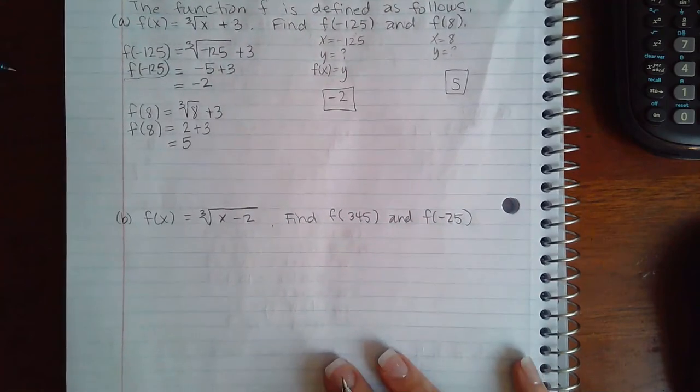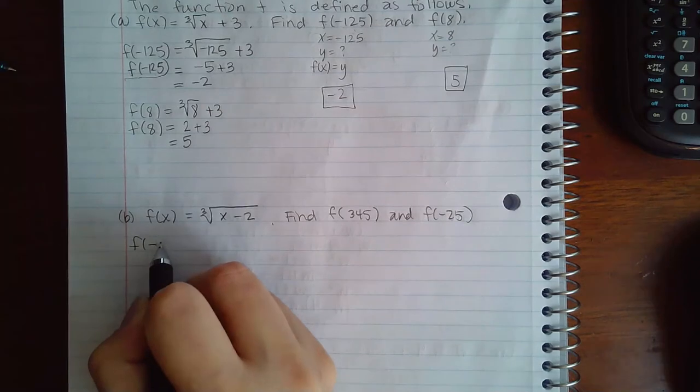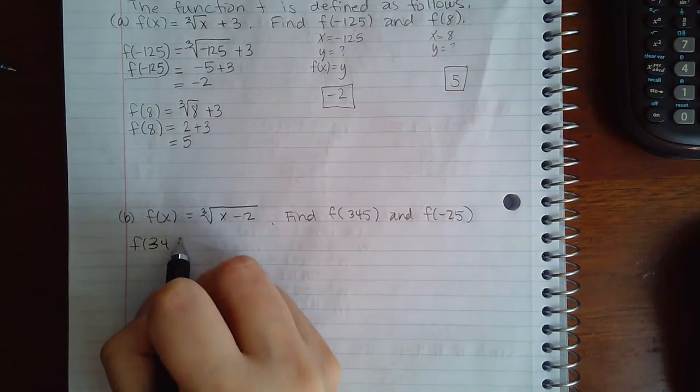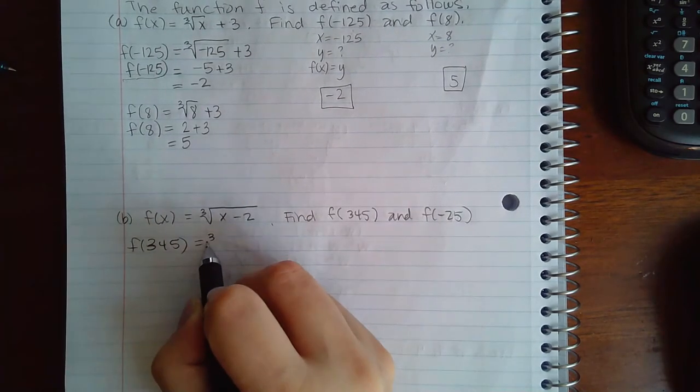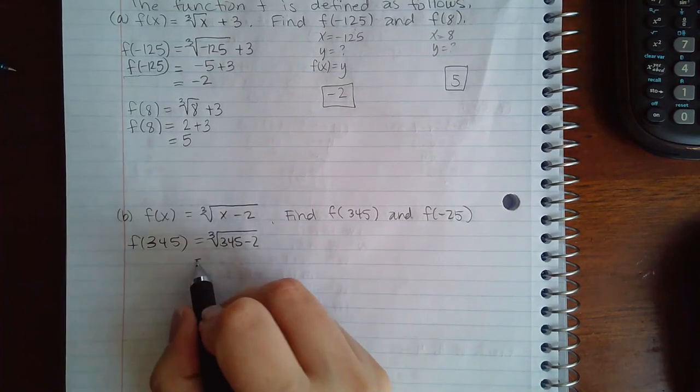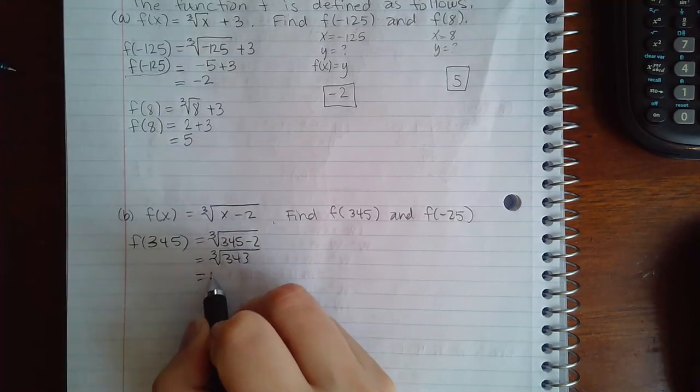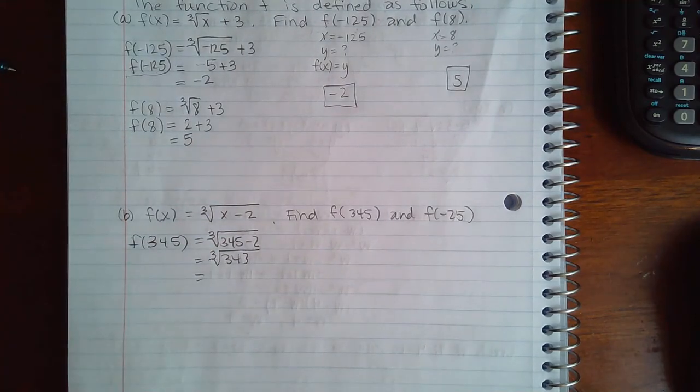Similarly for this example, for f(345) we're going to plug in 345. We have to work what's inside that radical first, and then the cube root of 343 is, I believe, 7. Yes, and so 7 is the answer there.